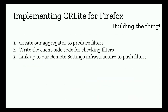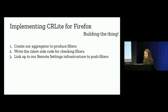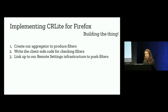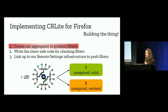I've given you a high-level overview of our system architecture, but we actually had to go about and build these components for Firefox. That meant creating our aggregator to produce filter files, writing the client-side code for checking these filter files, and linking all of this up to our remote settings infrastructure to push these files to clients. These are not simple steps — there are over two billion entries in the certificate transparency logs, and all of those have to be processed at least once by our aggregator.